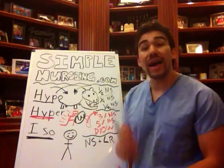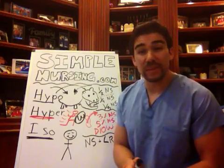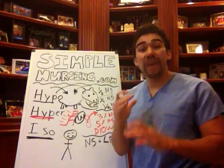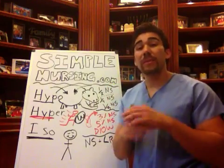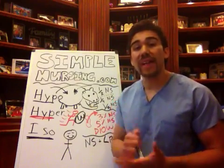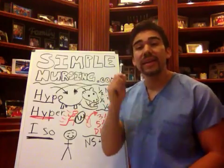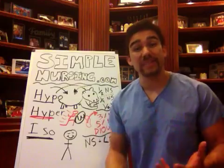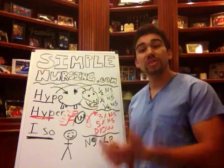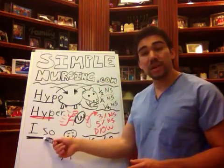Last one is our isotonic solutions. Nursing tests love to put this in because isotonic solutions remain intravascularly — in your veins. They're the biggest, most commonly used solution in the hospital, which is why nursing instructors love to put this on your test, because you're going to be using it a lot in the clinical setting. So NS, 0.9% sodium chloride, normal saline, is your isotonic solution.